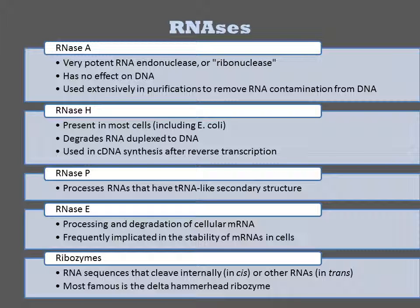There are a variety of RNases, a few of which have utility in DNA manipulations. RNase A is a very potent nonspecific RNA endonuclease, often referred to as a ribonuclease. It has no effect on DNA and is used extensively in DNA purifications for removal of RNA contamination. RNase H is present in most cells including E. coli. It degrades RNA duplexed to DNA, and is used in vitro during the synthesis of cDNA after reverse transcription of an RNA. RNase P is a common cellular enzyme that processes RNAs with tRNA-like secondary structure. RNase E is also common in the cell for processing and degrading mRNAs, and cleavage of specific sequences is frequently implicated in the stability of mRNAs in the cell.